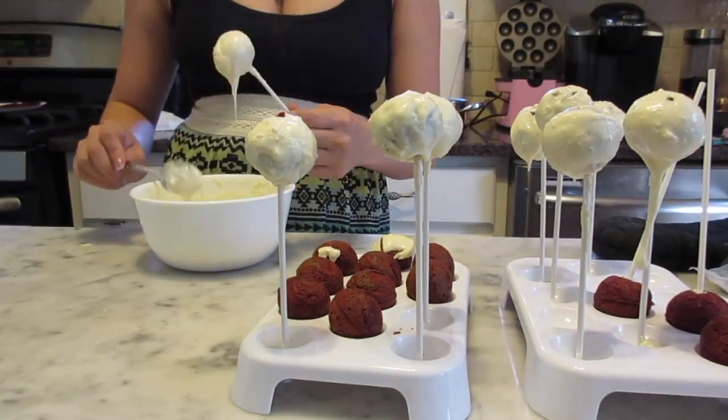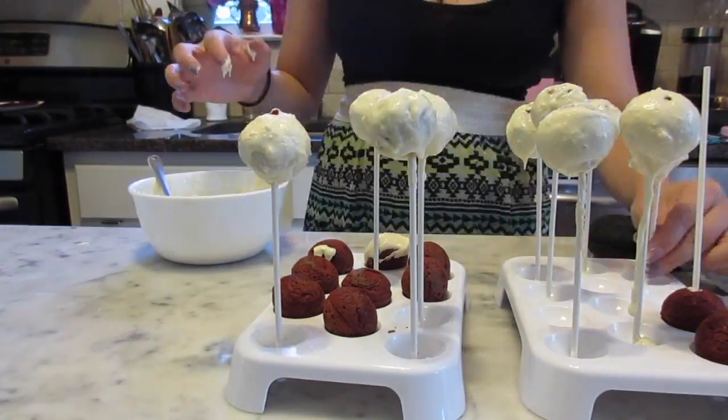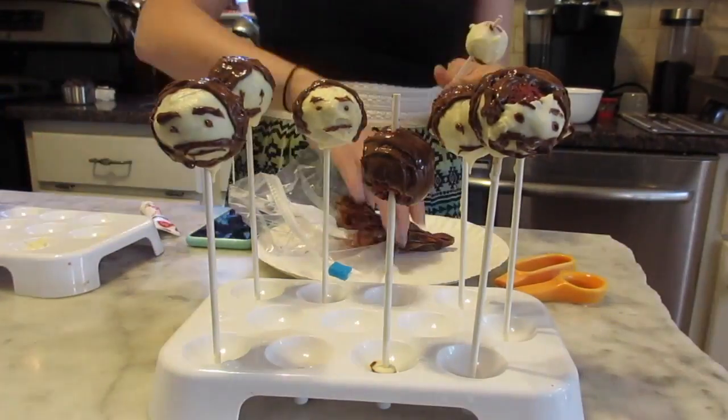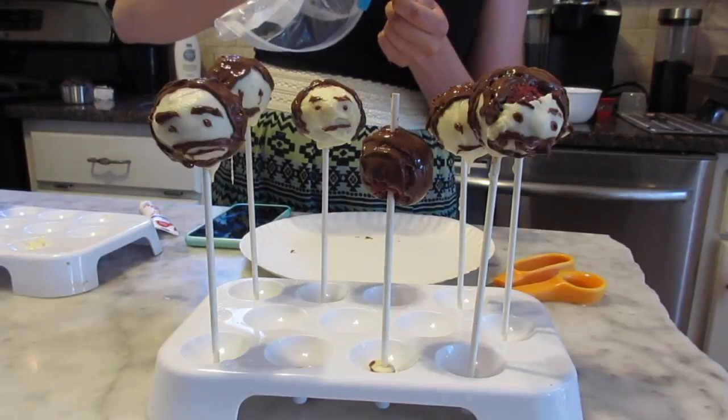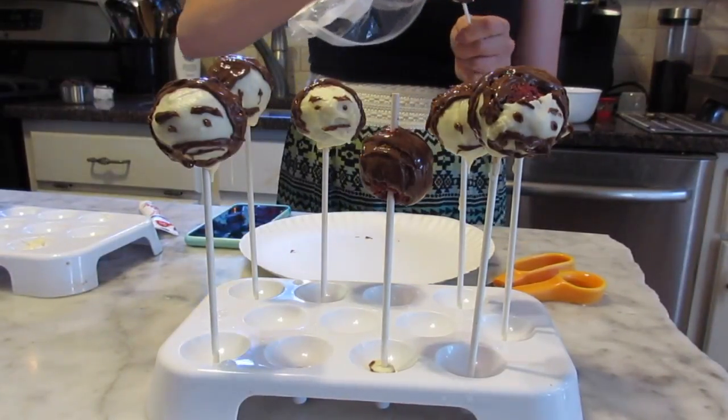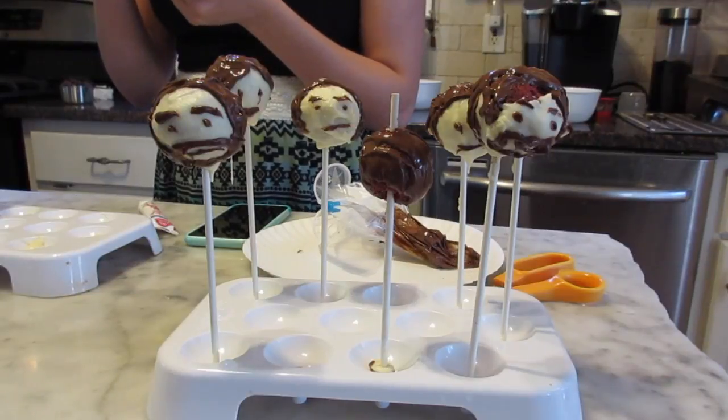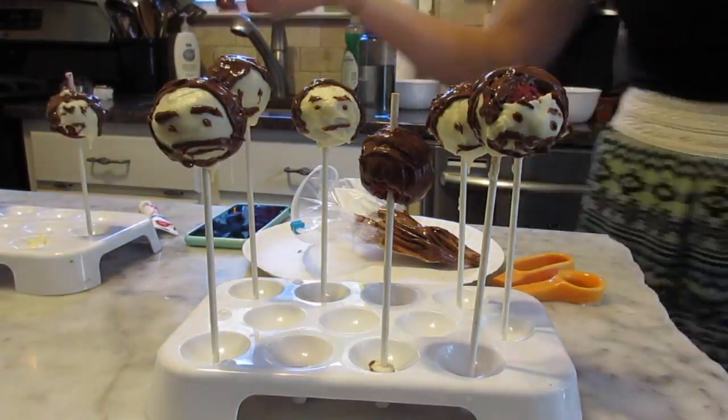Now I'm dipping the cake pops into white chocolate. After the white chocolate cooled in the refrigerator for 15 minutes, I took them out and melted the milk chocolate. I placed the milk chocolate around the head to make faces and left some of the red velvet cake showing so it looked like they got hit in the head.